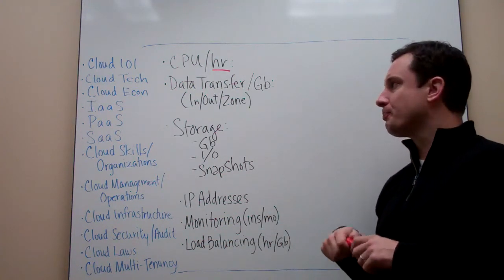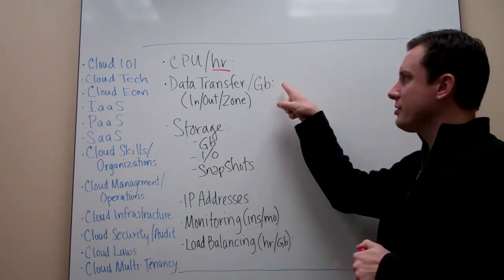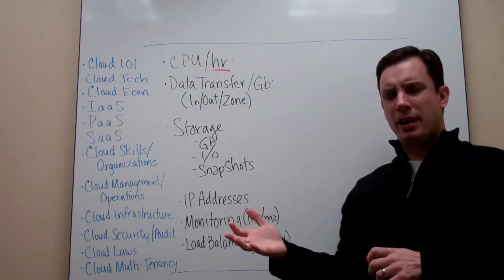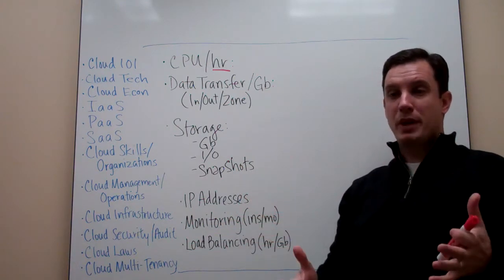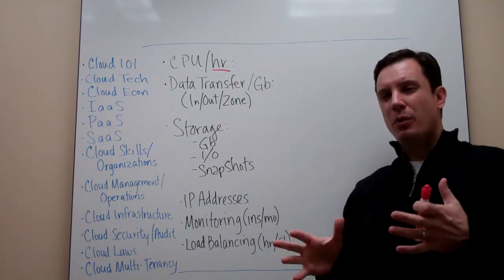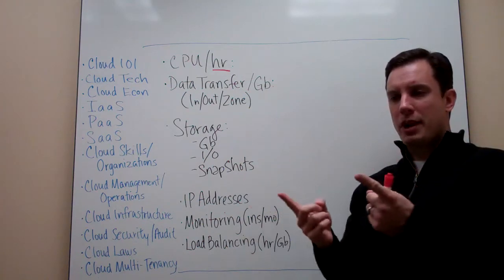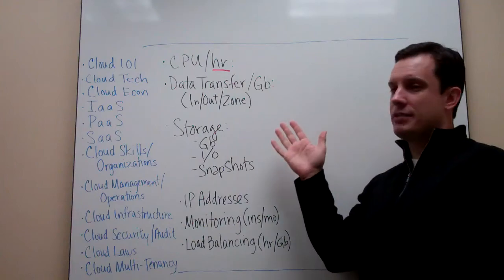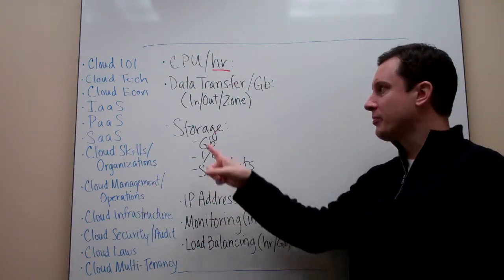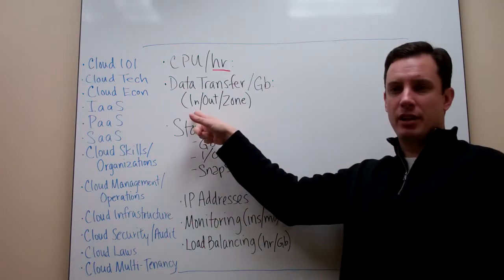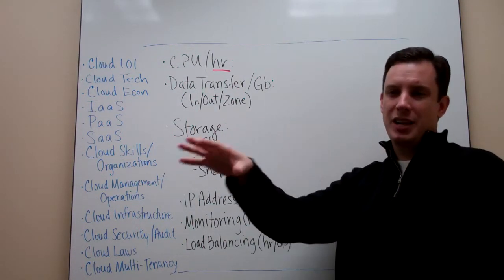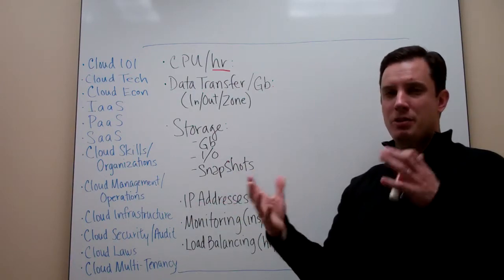A couple of cross-functional types of things. The next thing we're going to look at is data transfer. So now we think about the network and how much bandwidth my application generates. But we also have to think about where my traffic's going to go. And so bandwidth or data transfer is charged in three sort of vectors.